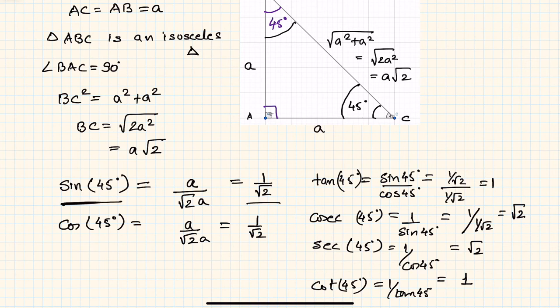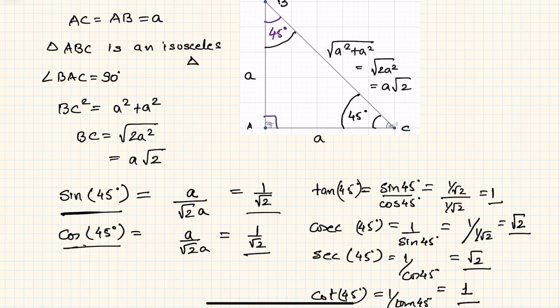Secant 45° = √2, and cotangent 45° = 1. You must remember these values because they will be used multiple times in problem solving. Thank you.